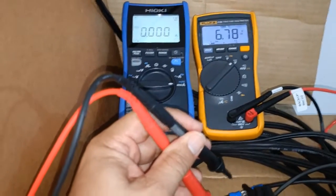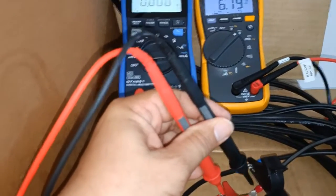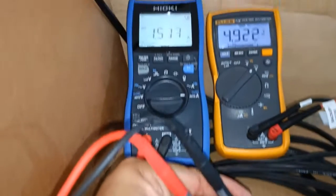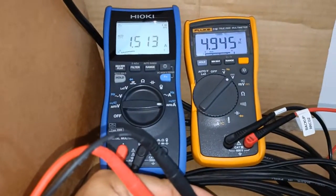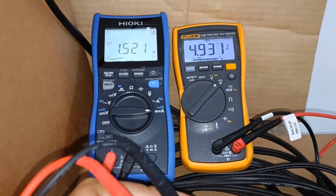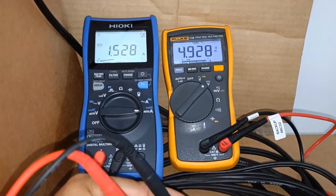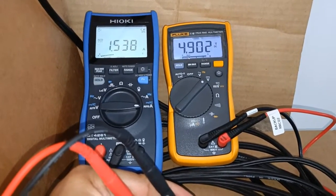The open circuit voltage at this time is 6.78 volts DC and the charging current is 1.515 amperes DC at a charging or loaded voltage of 4.9 volts DC.